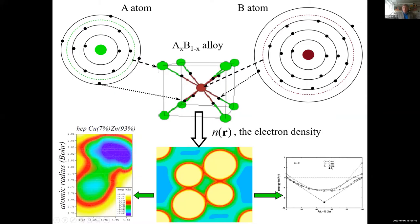We know that all materials consist of atoms; atoms consist of nuclei and electrons. Electrons move on roughly spherical orbits around atoms. When atoms form a solid, the inner electrons feel very little change, but the outermost electrons can leave their respective atoms and form bonds that keep atoms together. Electrons are quantum mechanical objects — they are never purely particles nor purely waves. The proper quantity to characterize electrons is the electron wave function, which is not directly observable; the observable quantity is electron density. This is the basis of density functional theory.